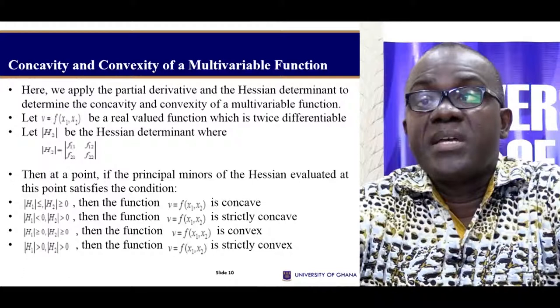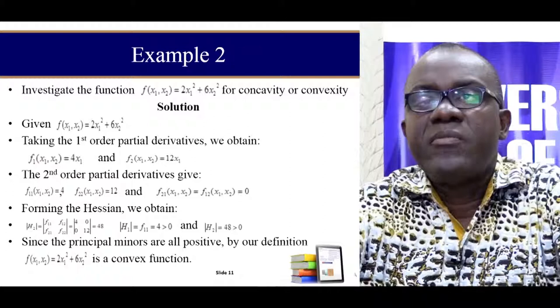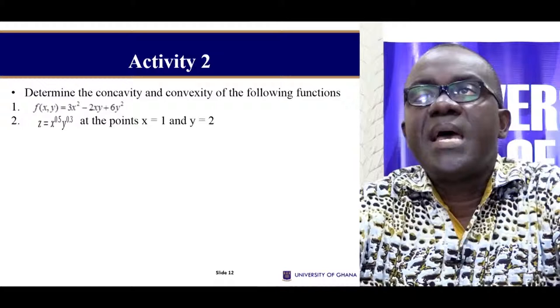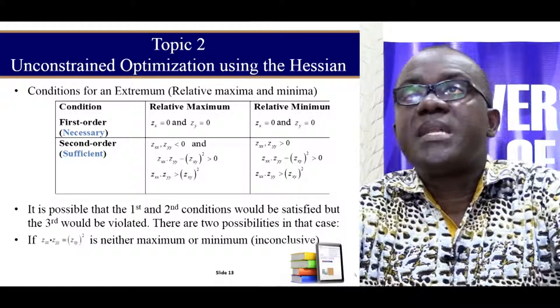These are the situations under which we will have a concave function or a convex function. I provide an example here. This is our function. We take the first order and second order differentials, we find our Hessian determinant, and then we evaluate at a point and we see that we have a convex function. Please take your time and look at this example to get the tools on how to deal with concave and convex functions using the Hessian determinant.